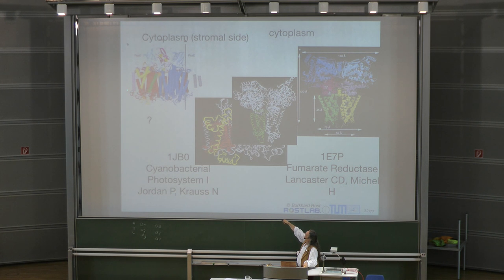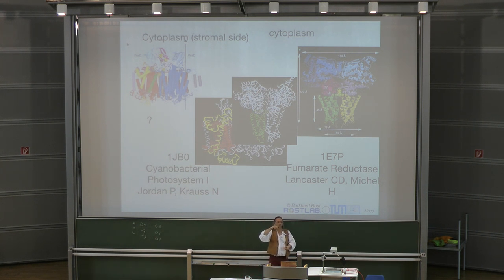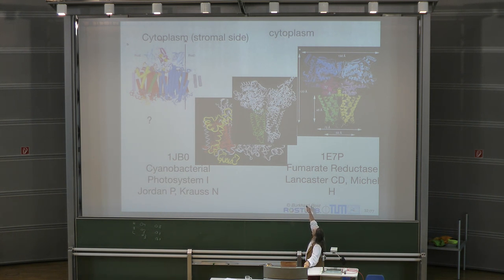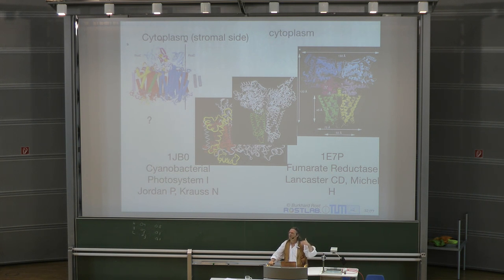Outside the cell you see mushroom structures — those could be gatekeepers or sensory signal devices. You can imagine something happening outside being transferred inside. Some membrane proteins are transporters that don't just send signals but actually let stuff through or actively transport ions — as in neurons.